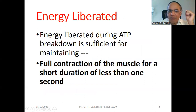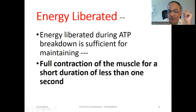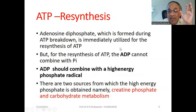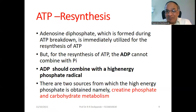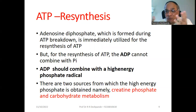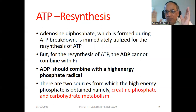Energy liberated during ATP breakdown is sufficient for maintaining full contraction for only a short duration of less than one second. Since ATP molecules are continually being utilized, nature ensures they are always resynthesized. New formation of ATP molecules is essential because muscle contraction is a continuous process — whenever ATP is destroyed, new ATP molecules must be generated.